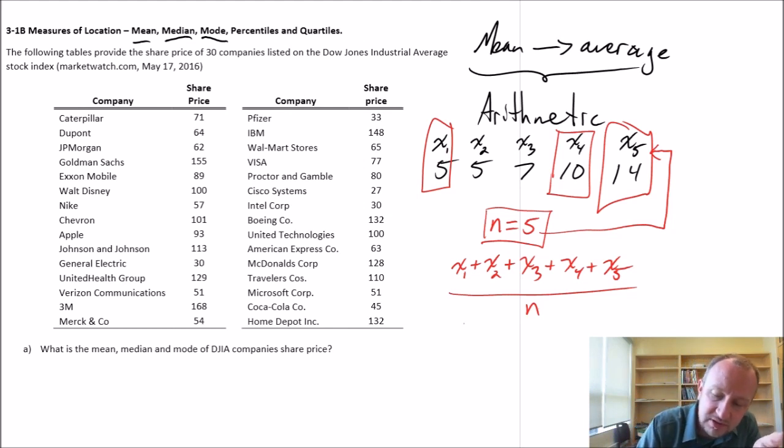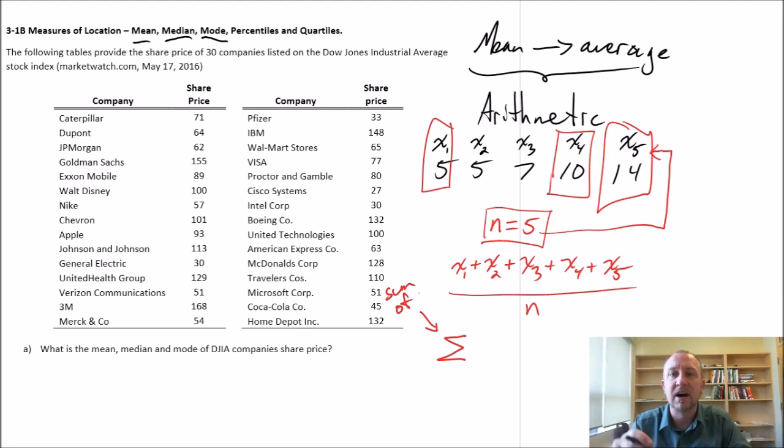When we write the more generic formula for a mean, the notation we'll use is this symbol here, which means the sum of. So the sum of xᵢ, where i is just an index, a placeholder, and it takes on every value from one through to n.